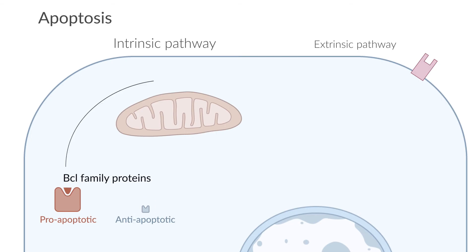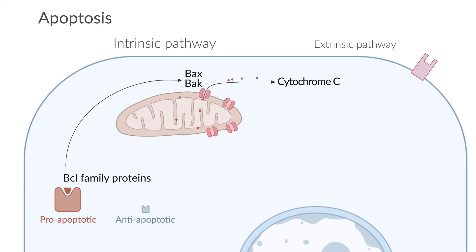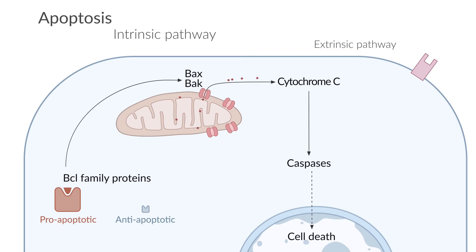The result is activation of the proteins BAX and BAK, which form pores in the mitochondrial membrane, leading to a subsequent release of cytochrome C. Cytochrome C is a molecule attached to the inner mitochondrial membrane and is part of the electron transport chain. Once released from the mitochondria, cytochrome C activates caspases, a class of protein-degrading enzymes that are the actual mediators of cell death. Because of the role of the mitochondria and the release of cytochrome C, the intrinsic pathway of apoptosis is also termed the mitochondrial pathway.